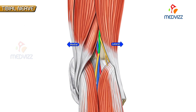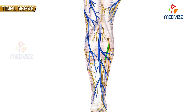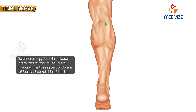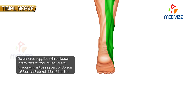In the popliteal fossa, the tibial nerve lies lateral to the top of the popliteal vessels and becomes superficial to them at the knee as it crosses to the medial side of the artery. In the popliteal fossa, the tibial nerve gives a branch called the sural nerve, which is joined by a sural communicating nerve — a branch of the common peroneal nerve — and supplies the skin on the lower part of the back of the leg, lateral border, adjoining part of the dorsum of the foot, and lateral side of the little toe.